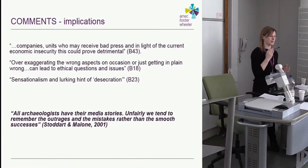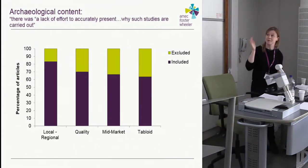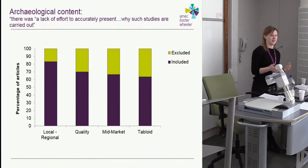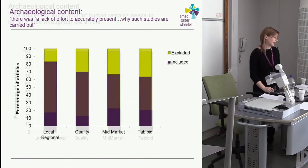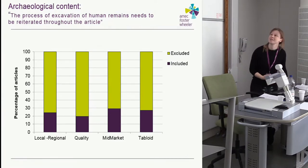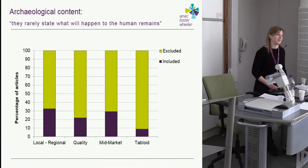I thought this was interesting because it's quite anecdotal — do we remember the outrages and mistakes more than the smooth successes? You can compare what people are concerned about against what newspapers actually reported. There was a concern about a lack of effort to accurately present why studies are carried out — but actually in quite a lot of newspaper articles it is covered. Another concern was that the process of excavating human remains needs to be explained throughout the article — and I think people's concerns are more valid here; it was excluded in quite a lot of articles. Similarly, newspaper articles tended not to mention what will happen to the human remains — whether reburied or otherwise.